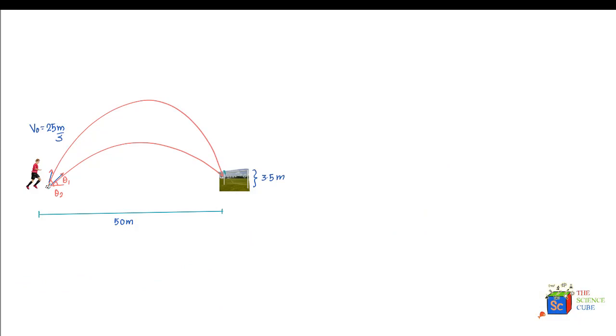We have a footballer who's about 50 meters away from the goal post, which is 3.5 meters high. The question asks us to find the two angles theta 1 and theta 2 at which, if the footballer hits a ball with an initial velocity of 25 meters per second, he'll end up scoring a goal.